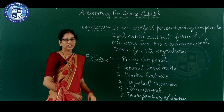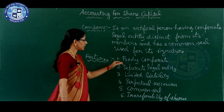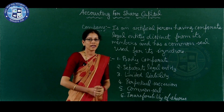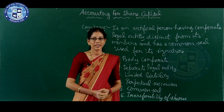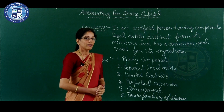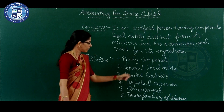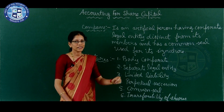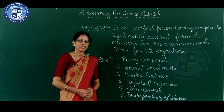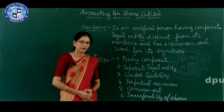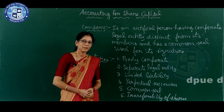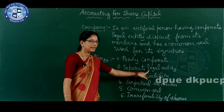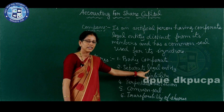Now let us study the features of a company. First feature is body corporate - in India, a company comes into existence as per the Companies Act, that is why a company has body corporate. Then separate legal entity - the business and its members, that is shareholders, are considered as two separate parties. That is why the company has its own separate legal existence.